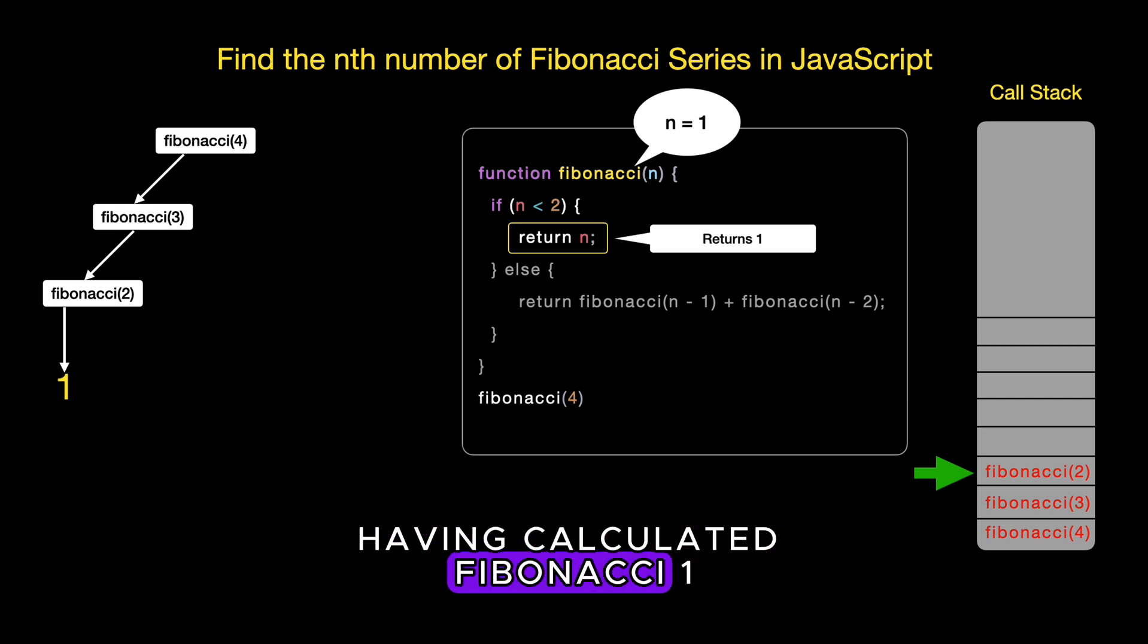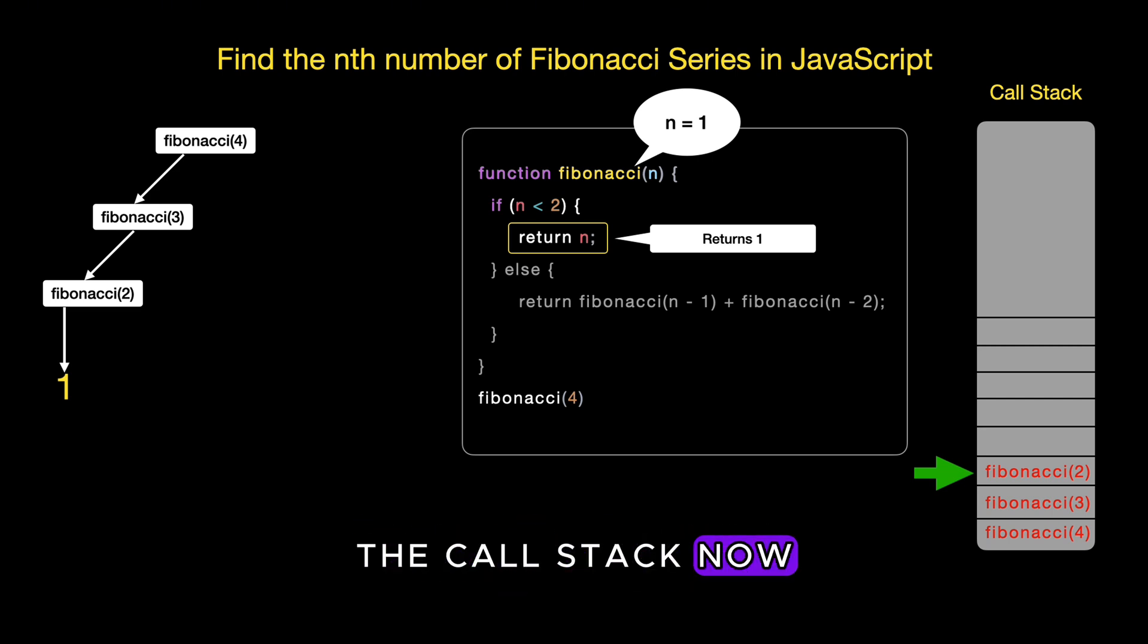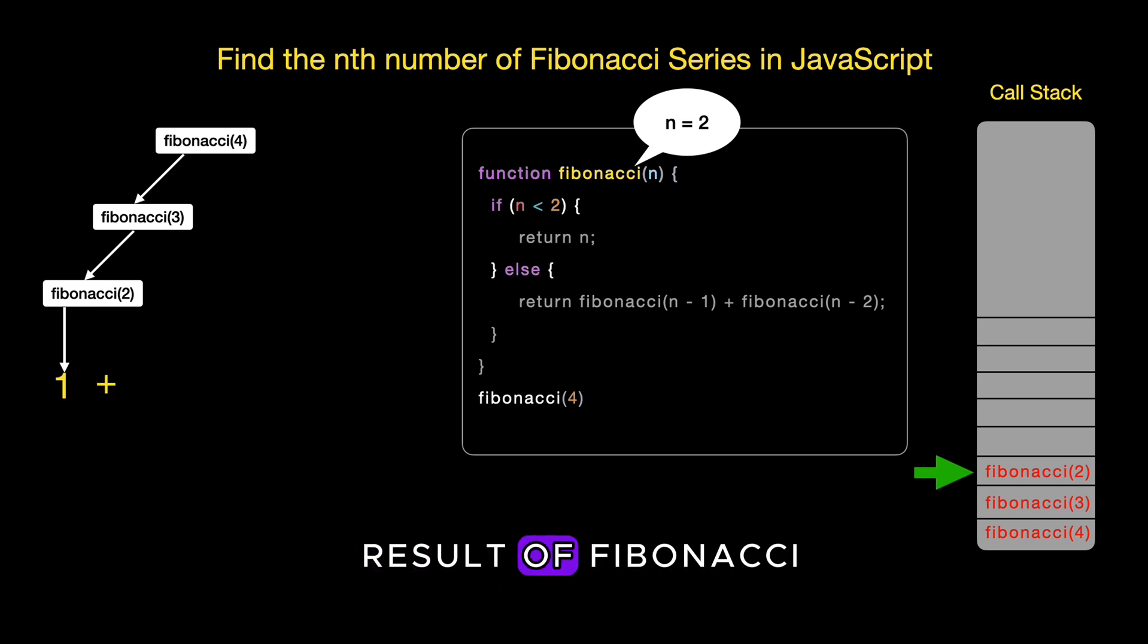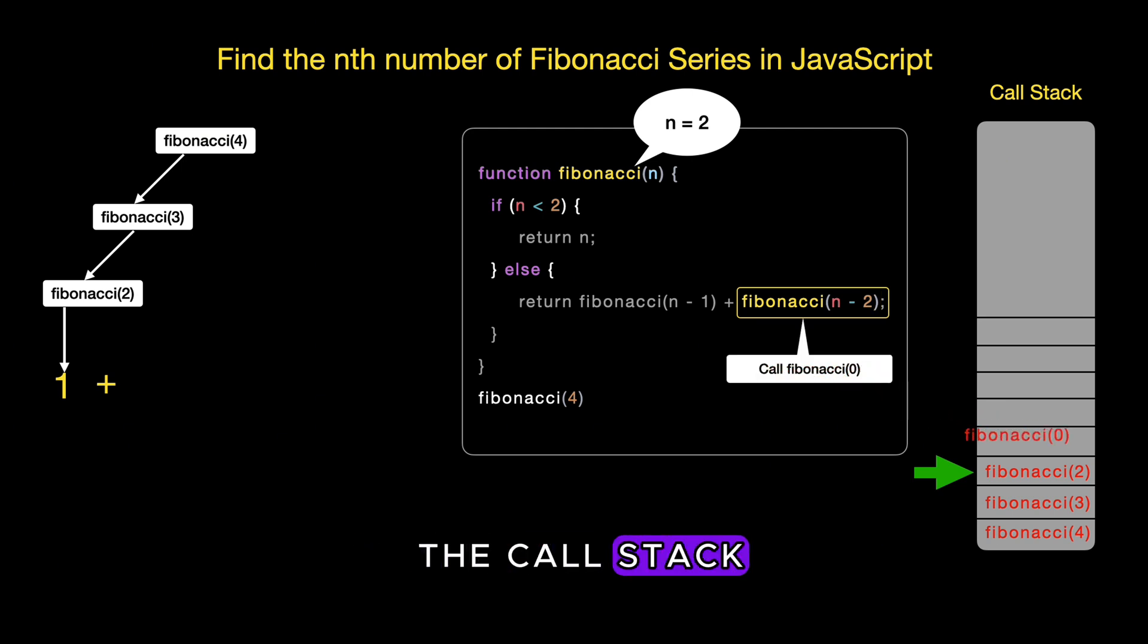Having calculated Fibonacci 1, the call stack now moves back to Fibonacci 2, where we have the result of Fibonacci 1 already determined. The next step in evaluating Fibonacci 2 is to find the value of Fibonacci 0. We call Fibonacci 0 and add it to the call stack.